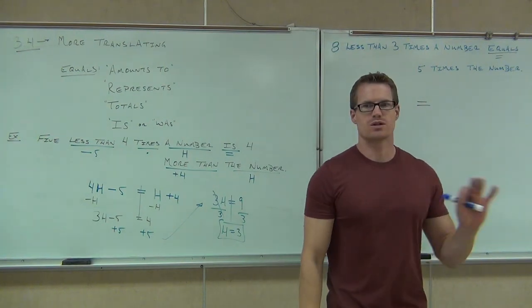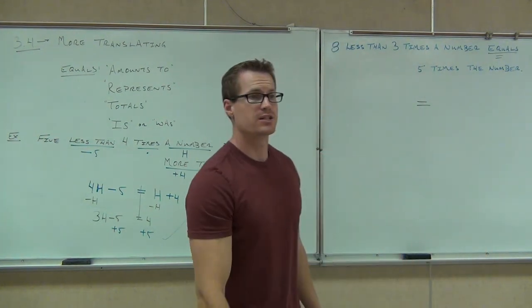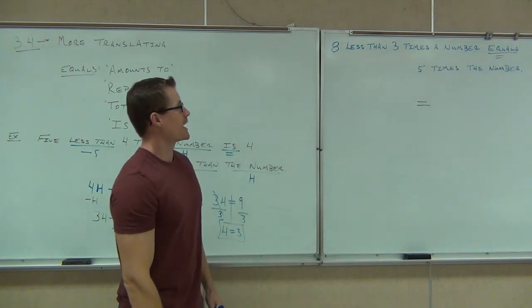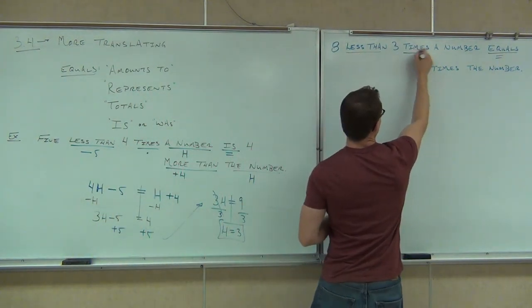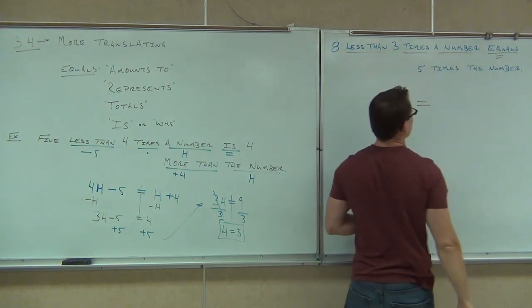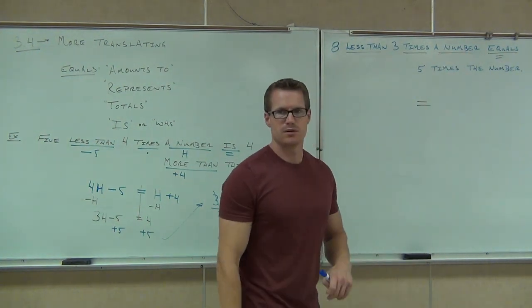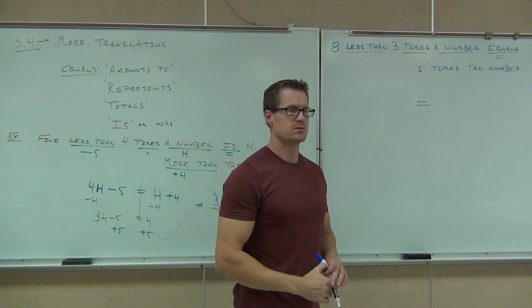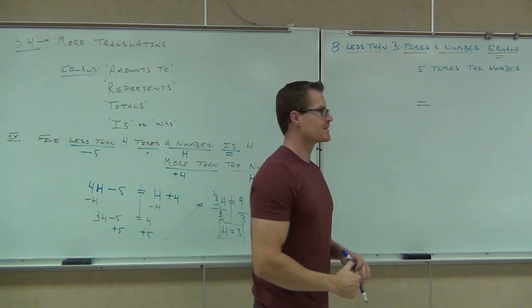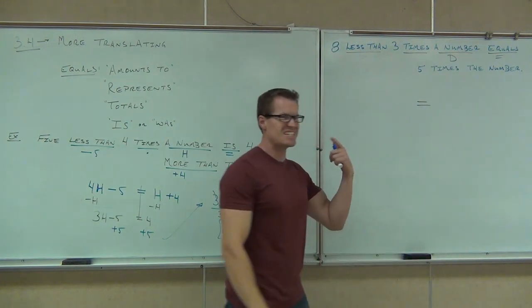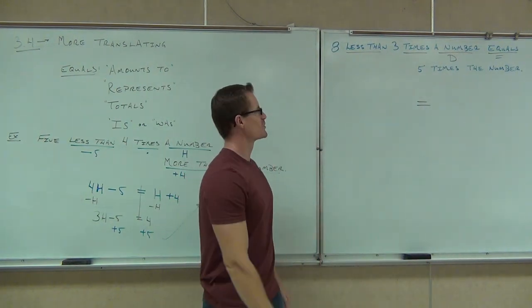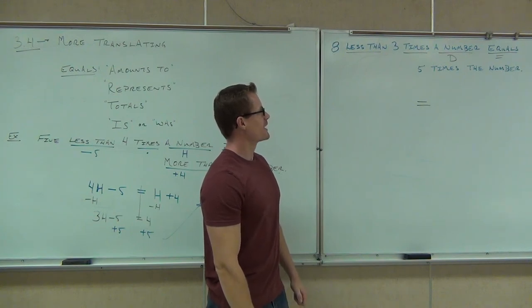Whatever comes before the equals goes on the left. After the equals goes on the right. Let's deal with the before. Eight less than three times a number tells me something about some math. What does it tell me? Three times a number. I heard less than. I heard times. And I heard a number. A number. Let's pick a number. Let's use D.